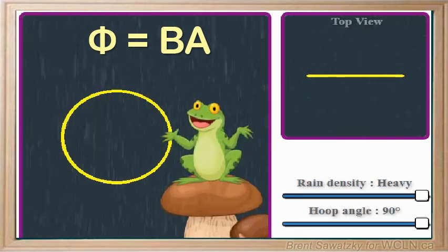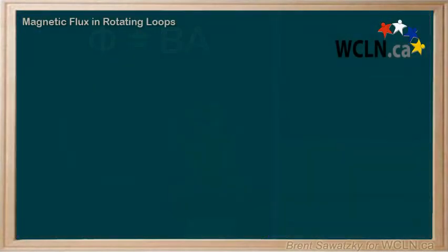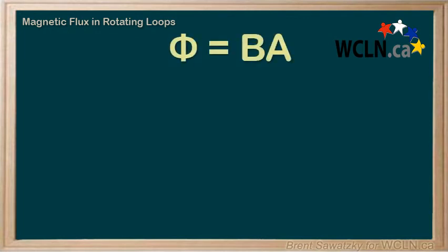Now that we can visualize the concept of a change in loop angle causes a change in flux, let's consider the related math, so we can accurately calculate the flux in these situations.